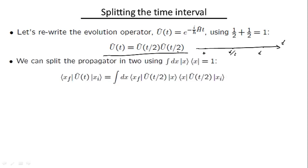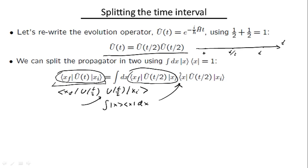Now, if we're going to focus on the actual propagator, which is the matrix element of this evolution operator between the initial point xi and the final point xf, what we can do is write it as xf u of t/2, u of t/2, xi, and insert here the resolution of the identity that we discussed in the previous slide. If we do so, we get to this expression, which essentially splits the original propagator into two propagators. One goes from xi to x, and the other goes from point x to the final point xf.